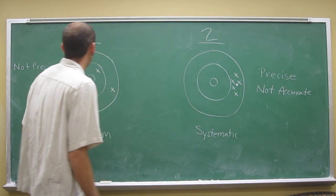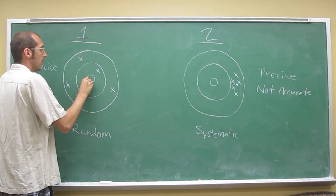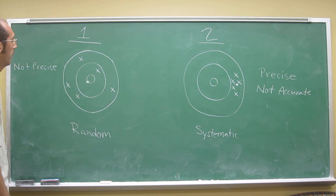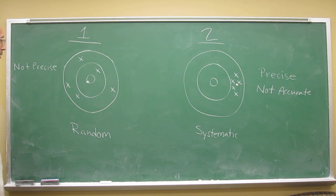Ironically enough, if you average these values, it'd probably be somewhere very close to the bullseye. So even though this person is not very precise, the average of the values gets closer to the bullseye, so it's more accurate than this one.